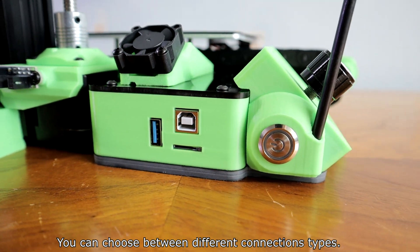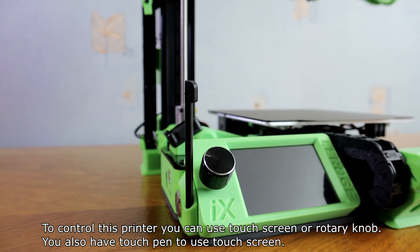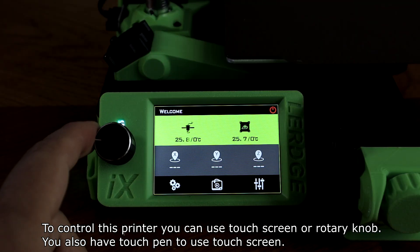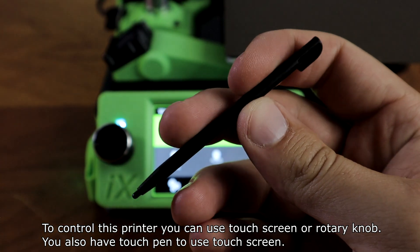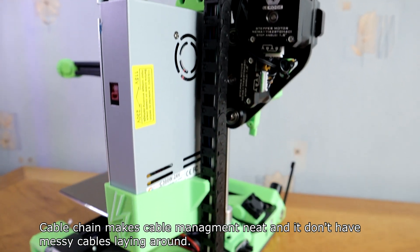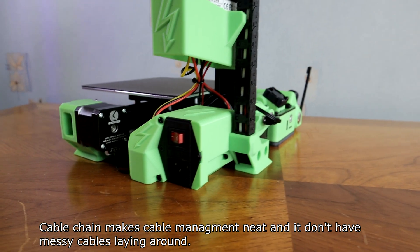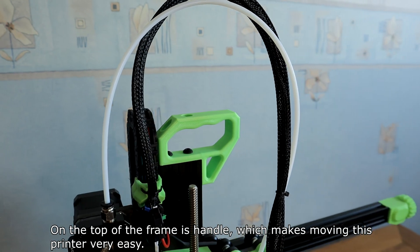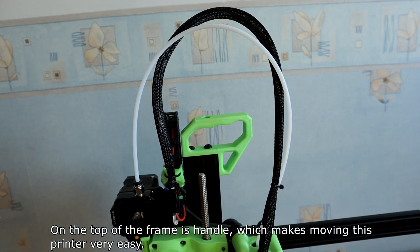You can choose between different connection types. To control this printer, you can use touch screen or rotary knob. You also have a touch pen to use the touch screen. Cable chain makes cable management neat and it doesn't have messy cables lying around. On the top of the frame is a handle, which makes moving this printer very easy.